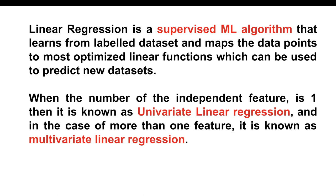Linear regression is a supervised machine learning algorithm that learns from a labeled dataset and maps data points to the most optimized linear function, which can be used to predict new datasets. From the name itself — linear regression — we have an input and an output. The model is provided with input and output data, and it tries to identify a straight line based on that data, which it can then use to predict new datasets.